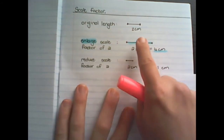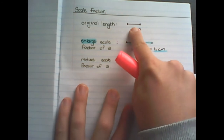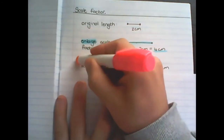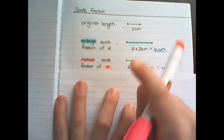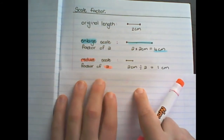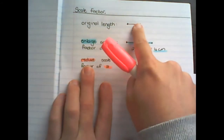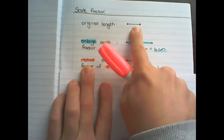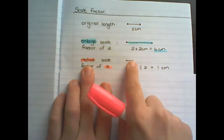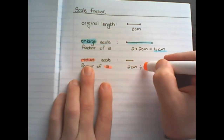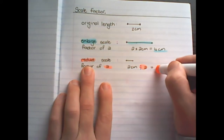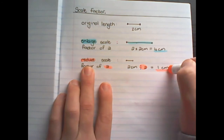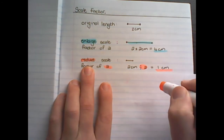I can also reduce the original length by a scale factor of two. And in order to reduce the original line, I would take the original length and divide it by two to get a length of one centimeter.